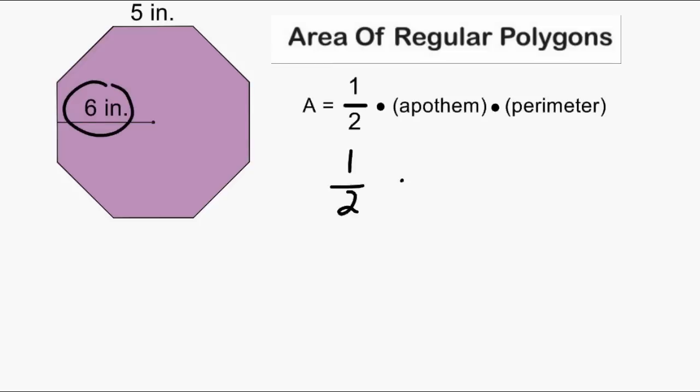So we have to multiply 1 half by 6 by the perimeter of our octagon. We can see that each side length of our octagon is 5 inches and because we have 8 sides equal in length, we can multiply 8 times 5 and that would give us a perimeter of 40 inches.